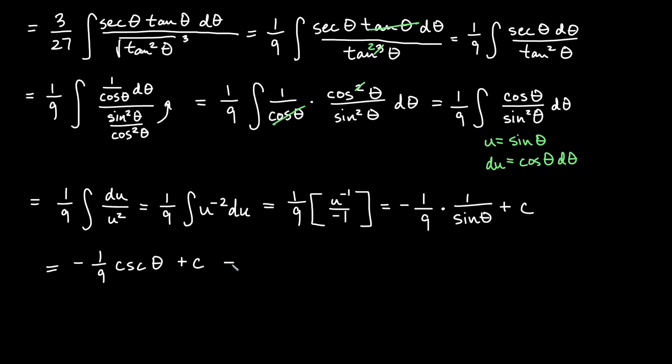We will get negative 1 over 9 times x over the root of x squared minus 9. We can clean that up just a little bit. If we want we could just say negative x over and put the 9 in with the root. 9 root x squared minus 9. All of that plus c.